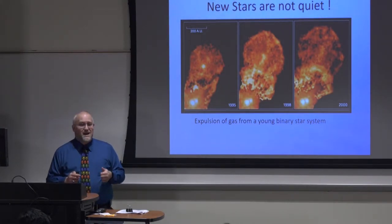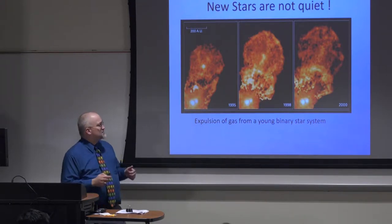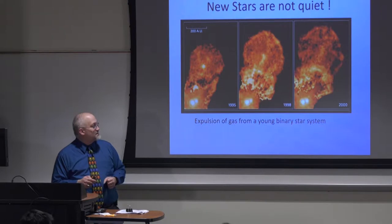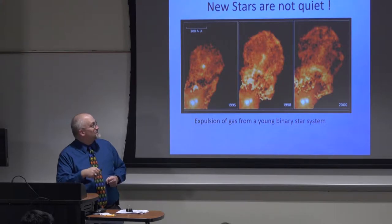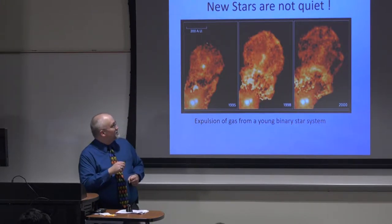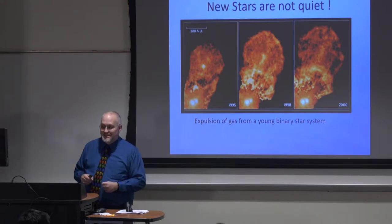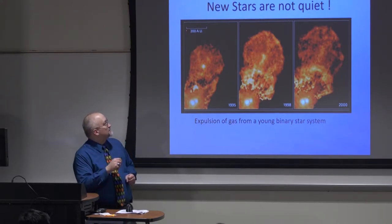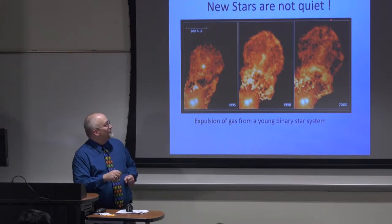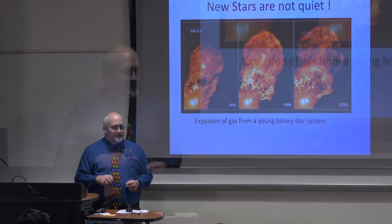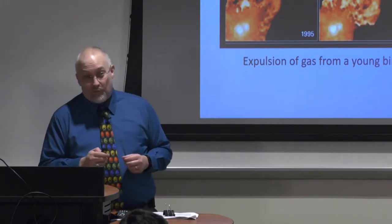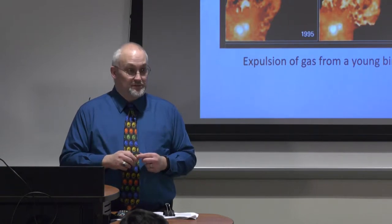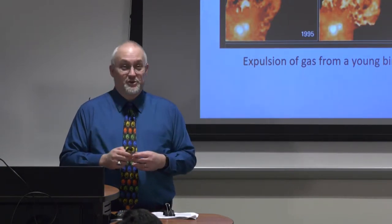New stars are not quiet. As soon as the stars form, you can see an expulsion of gas from a young binary star system — two stars that formed together — with plumes of gas coming out. From 1995 to 2000, over that five-year period, the spread reached about 200 astronomical units. The stuff they kick out is moving fast — you do not want to be next to a newly formed star, or actually it will push you away fairly quickly.